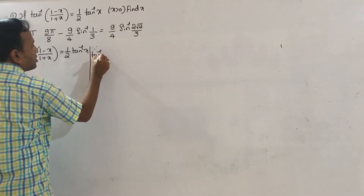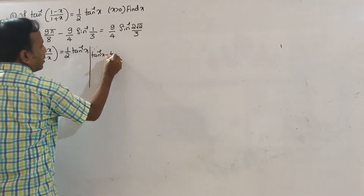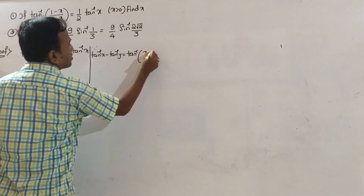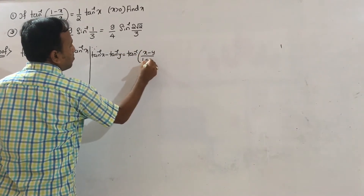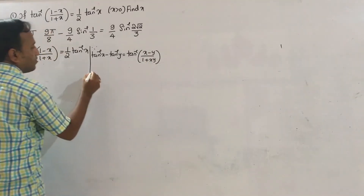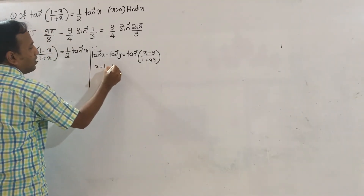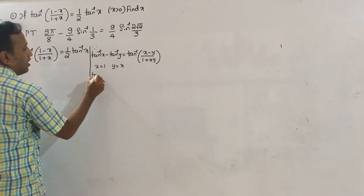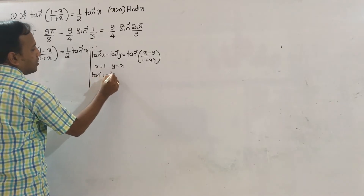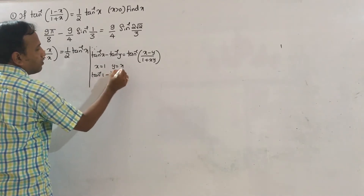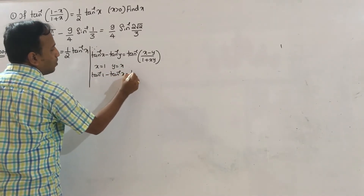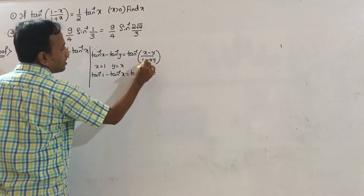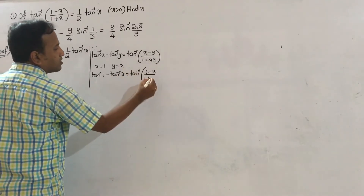So the formula is: tan inverse x minus tan inverse y equals tan inverse of (x minus y) divided by (1 plus xy). Here x is equal to 1 and y equals x. So tan inverse 1 minus tan inverse x equals tan inverse of (1 minus x) divided by (1 plus x).